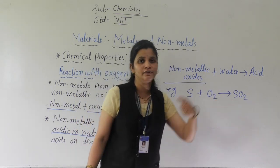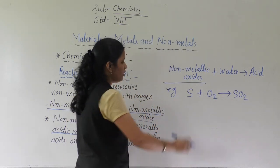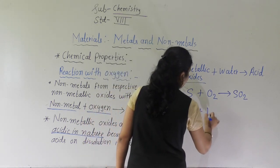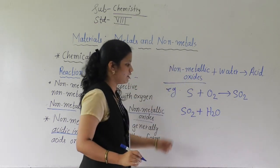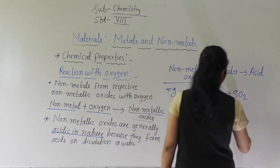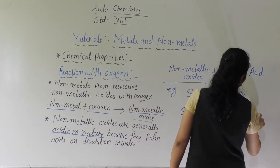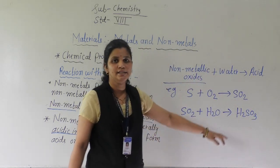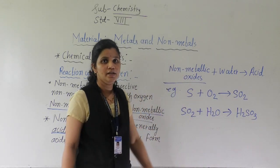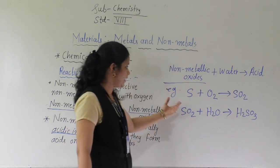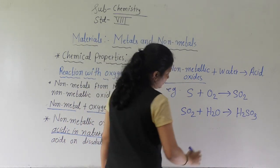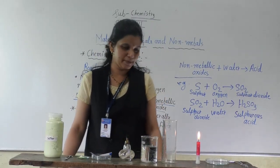This oxide is acidic in nature. When sulphur dioxide (SO₂) is dissolved in water, it forms an acid — sulphurous acid. So when metals react with oxygen a base is formed, but when non-metals react with oxygen an acid is formed. Write this reaction in your notebook: SO₂ + H₂O → sulphurous acid.